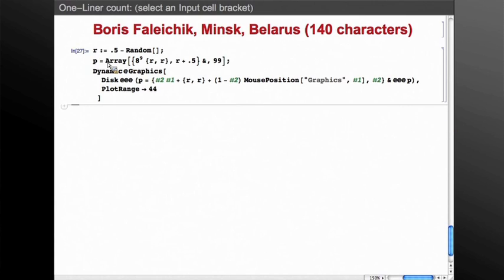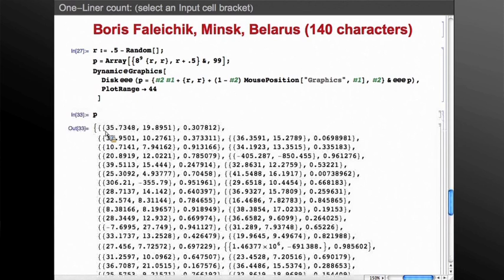P here is an array of 99 things, and each one is a pair. Let's just take a look at P. It'll make it easier to understand. So each one is a pair which contains a pair of numbers and then a single number. These are, in fact, the centers and the radii of the disks that the graphic explains. So it initializes P to this initial list.